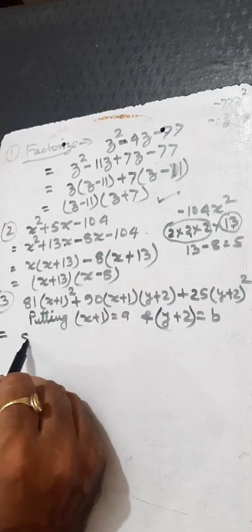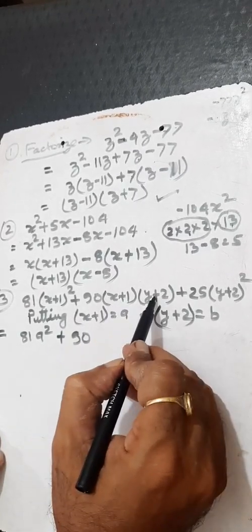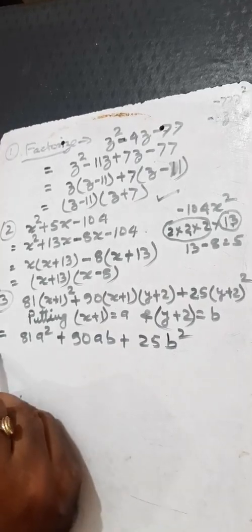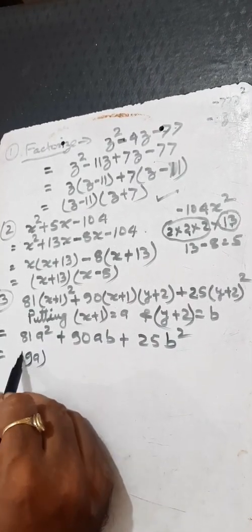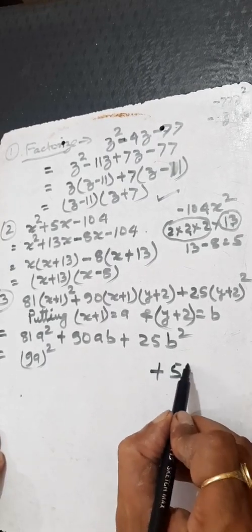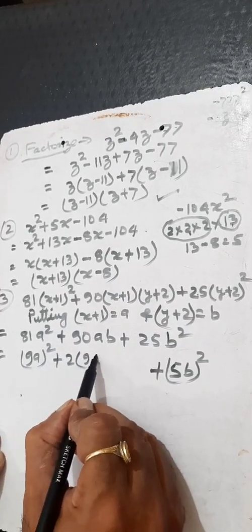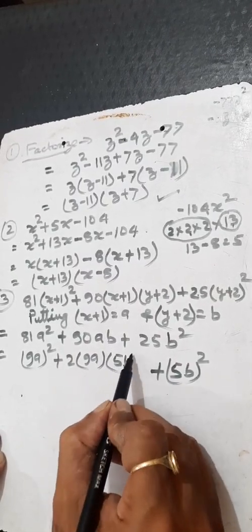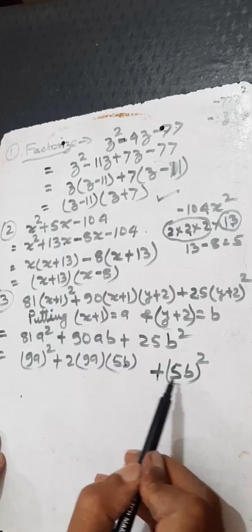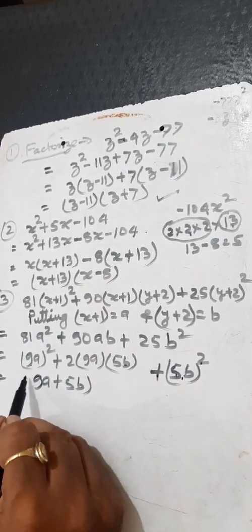It becomes 81A squared plus 90AB plus 25B squared. Now we can write 81A squared as (9A) whole square and 25B squared as (5B) whole square, so this is in the form of a squared plus 2ab plus b squared, which equals (a plus b) whole square. So it becomes (9A plus 5B) whole square.